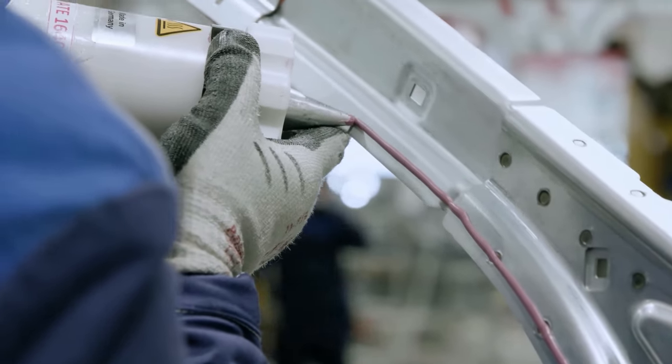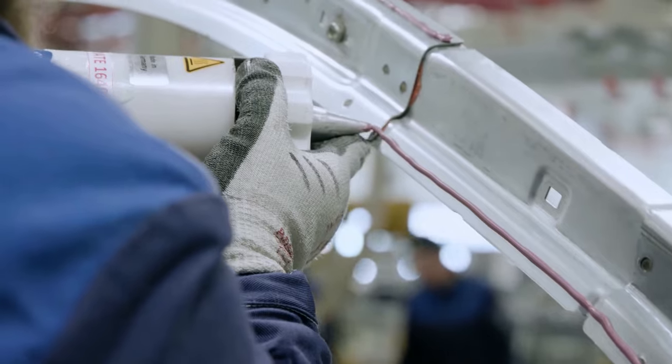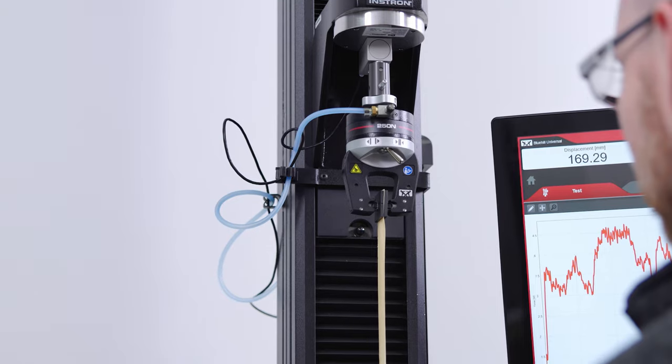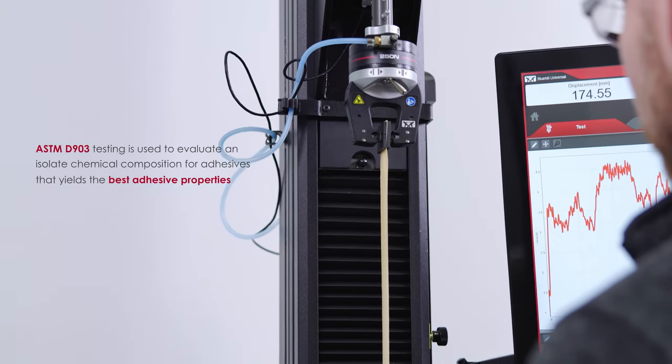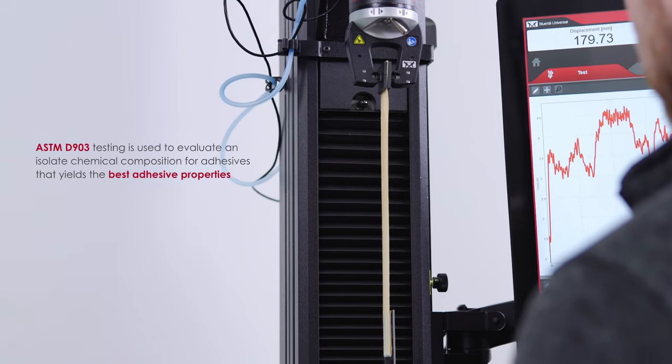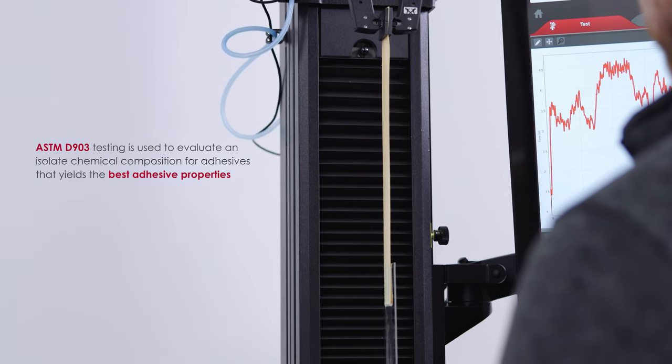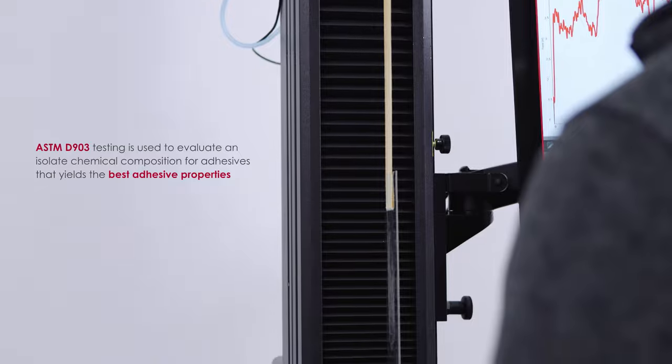Testing to ASTM D903 is mainly performed for research and development purposes. In most instances, ASTM D903 testing is used to evaluate and isolate chemical composition for adhesives that yields the best adhesive properties.